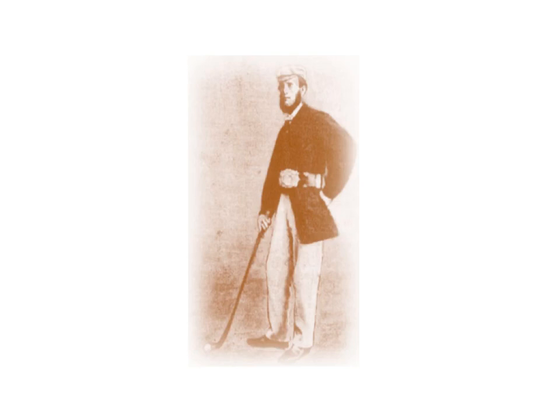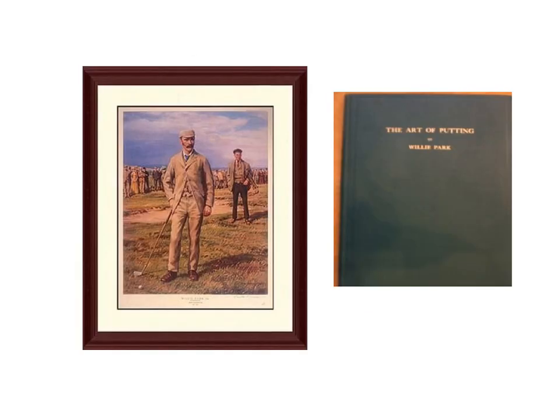Willie Park Sr. helped increase golf's popularity with challenge matches against the likes of Old Tom Morris, Willie Dunn, and Alan Robertson. Willie Park Jr. was an accomplished golfer in his own right, winning the Open in 1887 and 1889. He was an accomplished putter, which was good because he did not strike the ball particularly well.